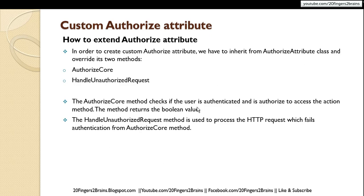In order to create a custom authorize attribute, we have to inherit from the AuthorizeAttribute class and override its two methods. So basically you will create your custom attribute class, inherit from AuthorizeAttribute, and override two methods: AuthorizeCore and HandleUnauthorizedRequest.